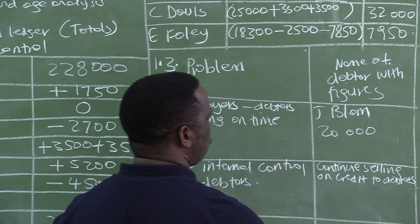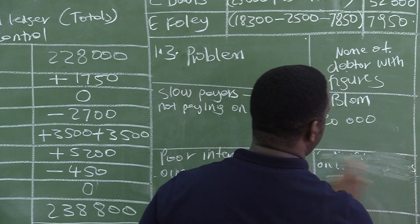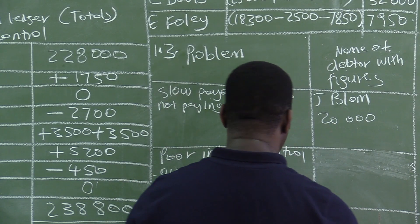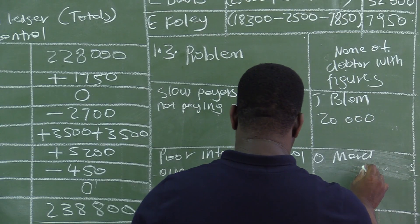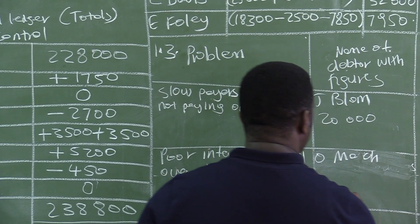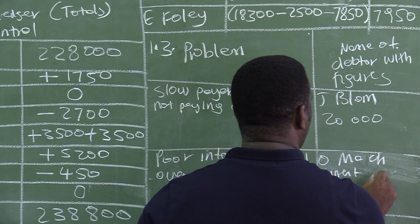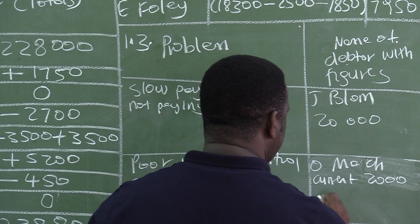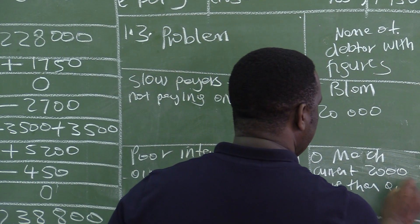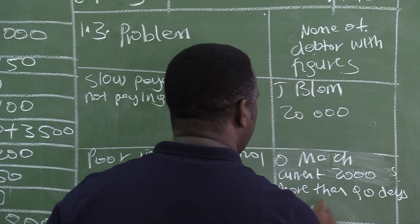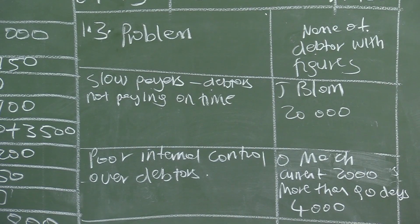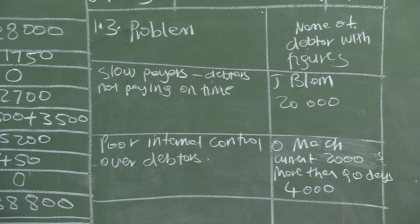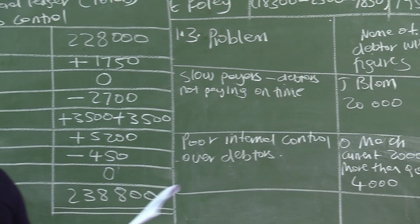There is poor internal control over our debtors. The name of the debtor is Omak. The current column shows that we have recently sold to Omak for R2,000, even though there is R4,000 that has been owing for more than 90 days. We continue to sell to debtors even when their accounts are overdue.